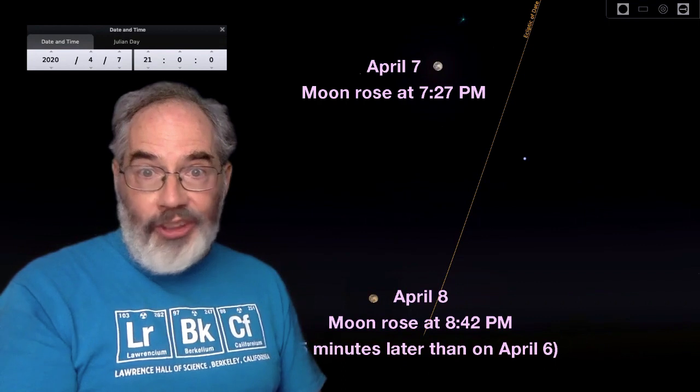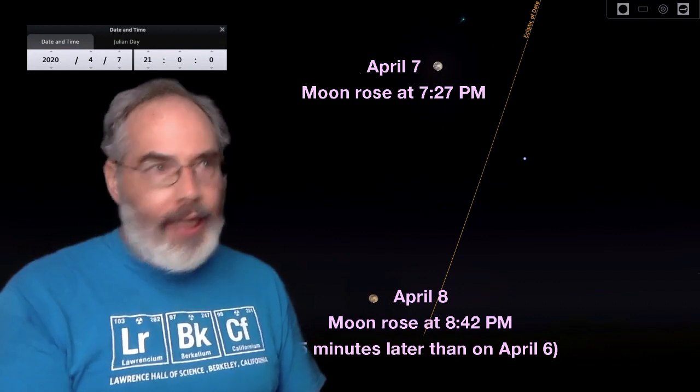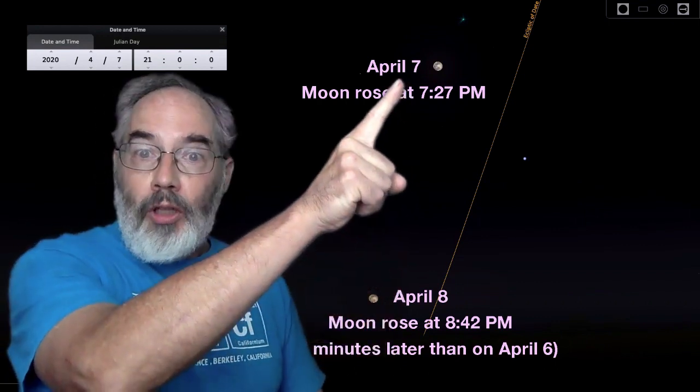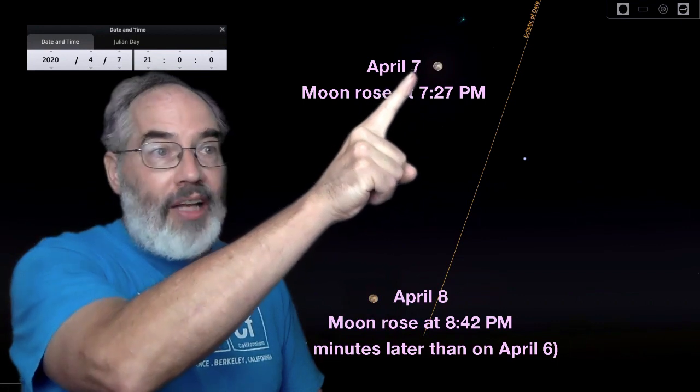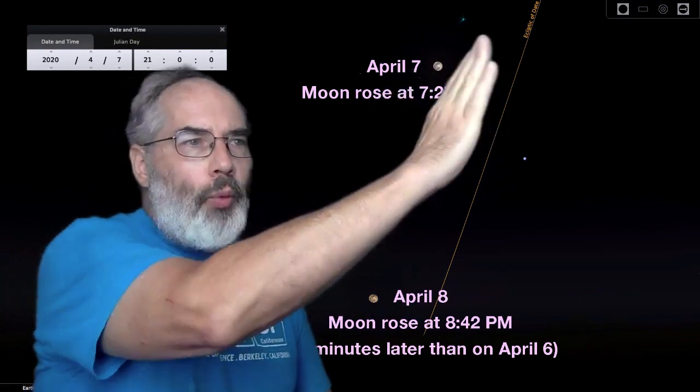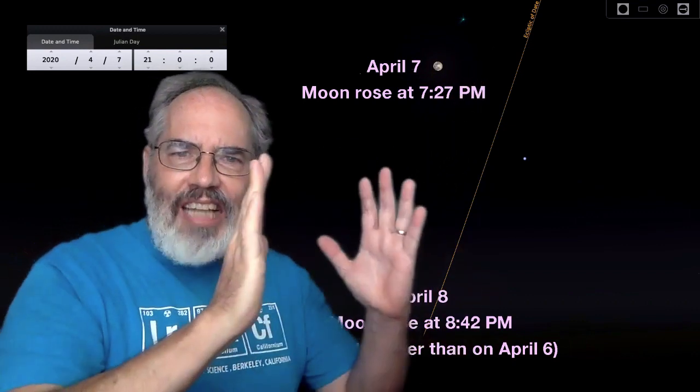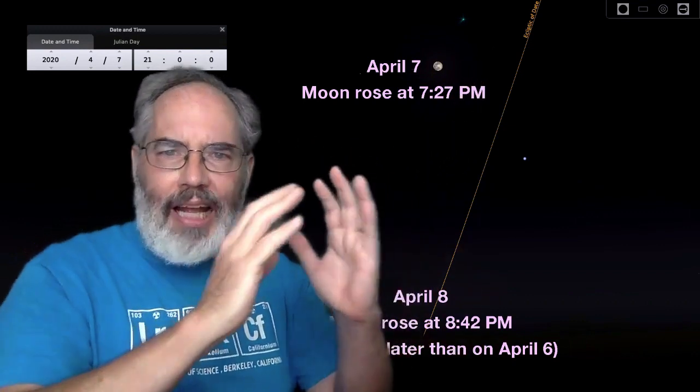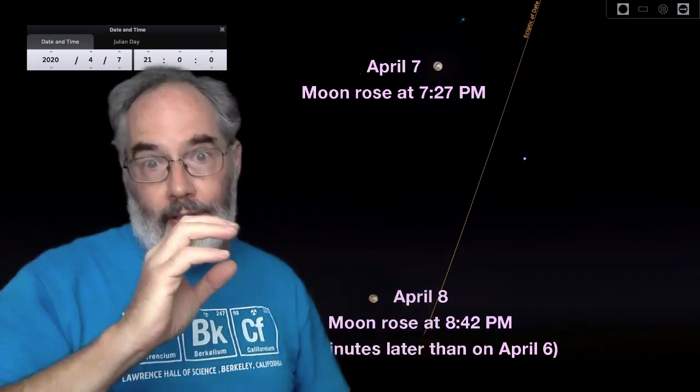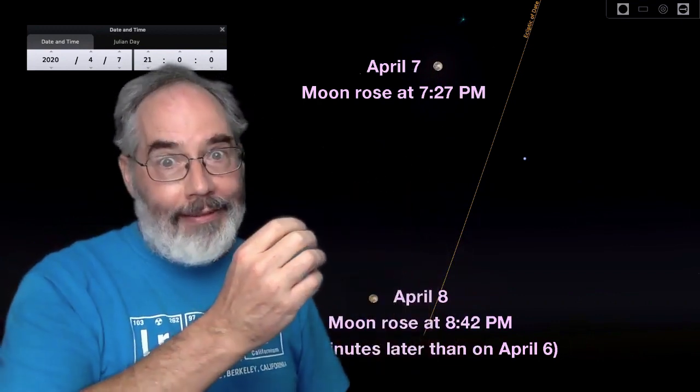Things are different when the moon is full near the beginning of spring. This year, the full moon closest to the beginning of spring was on April 7th. When I look at the ecliptic around sundown at that time, it's very steep, and these changes in the steepness of the ecliptic have to do with the tilt of the earth.